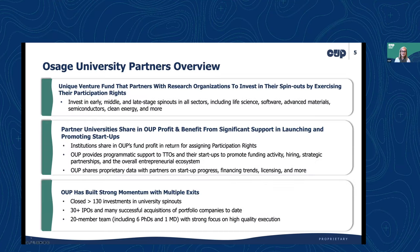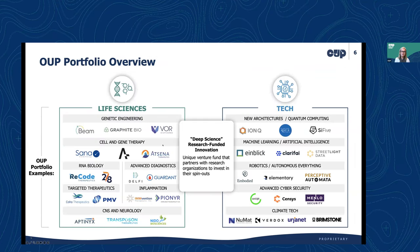A short intro to OUP: we're a venture fund that partners with academic institutions to invest in their startups, typically by exercising participation rights available through their licenses. Institutions share in our profits and receive programmatic support on tech transfer and academic startups. We're now on our fourth fund with investments in over 130 companies across deep science, many with successful exits through IPOs or M&A.